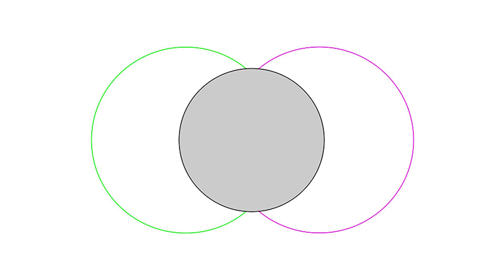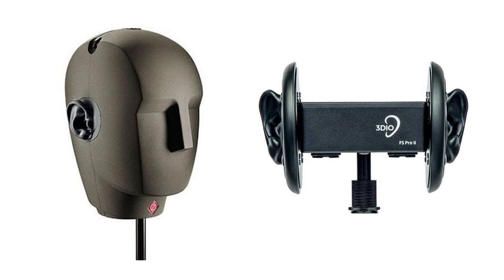The last type is called a baffled pair. A baffled pair could technically be considered a near-coincident pair, but with a twist — we place a barrier between the two microphones. This gives us a big advantage because we can now capitalize on all three localization cues: interaural level differences, interaural timing differences, and head-related transfer function. Several companies produce microphones specifically designed for binaural recordings using two microphones placed in an artificial human head. You can get a similar effect by using two omnidirectional lav microphones placed just inside your ears, using your skull as the baffle.